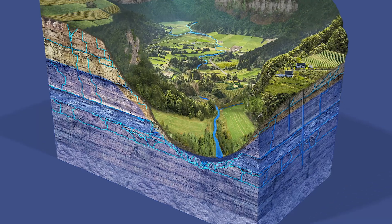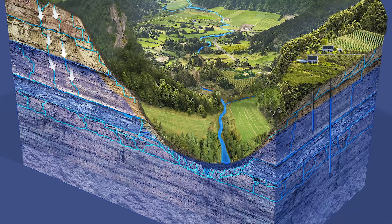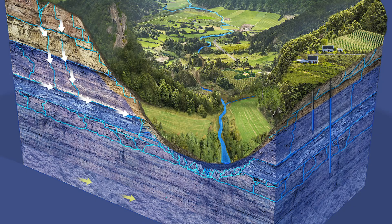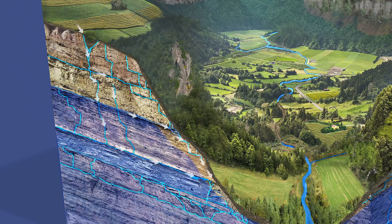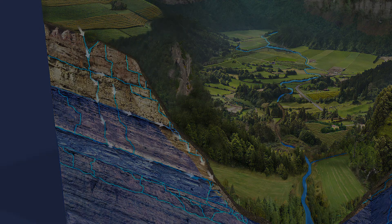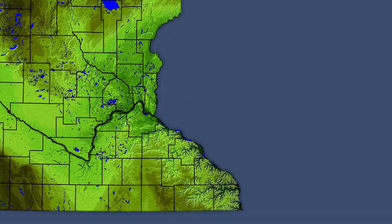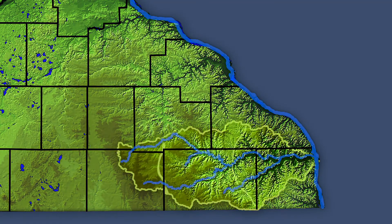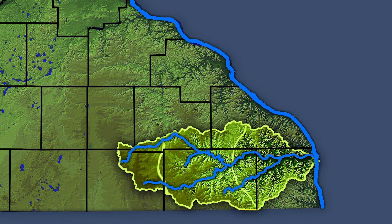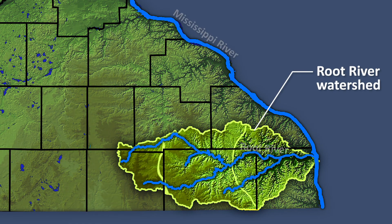Groundwater contained within aquifers can move downward due to gravity, sideways due to different rock properties, and upwards due to pressure. Predicting where groundwater will go is not easy because the various layers of sediment and rock influence the water's path. We'll use Minnesota's Root River watershed to explain how groundwater moves across three different landscapes in Southeast Minnesota.